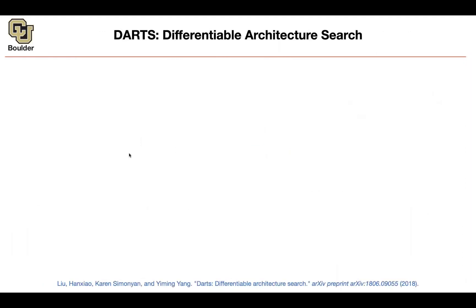The next topic is about DARTS. So far we have been using evolutionary algorithms and reinforcement learning algorithms. Can you actually do plain vanilla gradient descent to do architecture search? At first sight it might seem impossible, because the choices between a separable convolution and a convolution, or between filter sizes 3x3 or 5x5, are discrete choices. That's why people started using reinforcement learning and evolutionary algorithms — because whenever you have discrete choices, it's not easy, or even impossible, to do gradient descent.